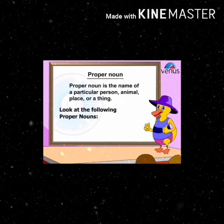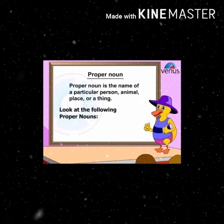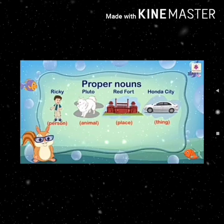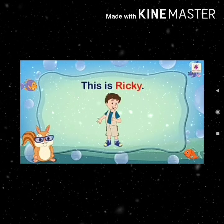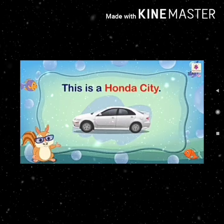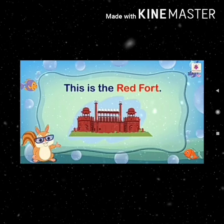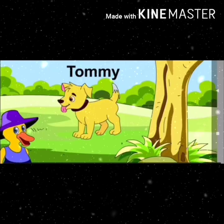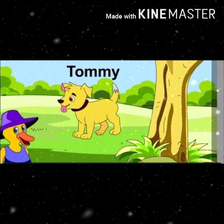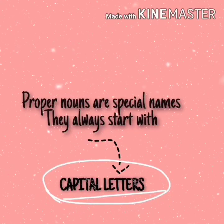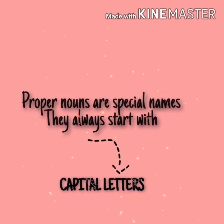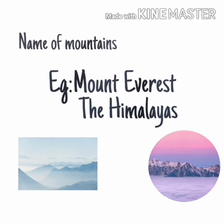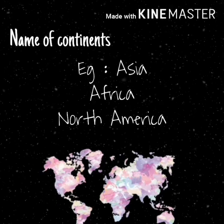Proper noun is the name of a particular person, animal, place, or thing. Let us look at examples of proper nouns. This is Ricky. This is a Honda City. This is the Red Fort. This is Tommy. Proper nouns are special names — they always start with capital letters. Names of mountains, for example: Mount Everest, the Himalayas.